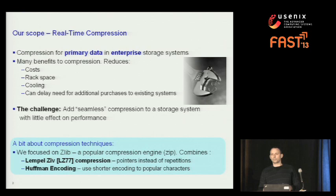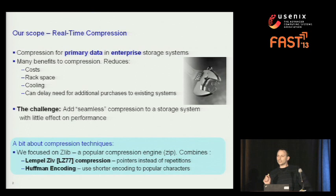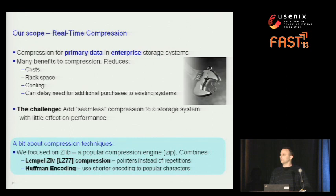We studied the Zlib library — probably the most popular compression codec out there. Every time you run Gzip, that's what's running behind it. It employs two central methods: Lempel-Ziv compression, which looks for repetitions in your stream and replaces long repetitions with short pointers; and Huffman encoding, which exploits the non-uniformity of characters and encodes popular ones with shorter encodings to gain space.